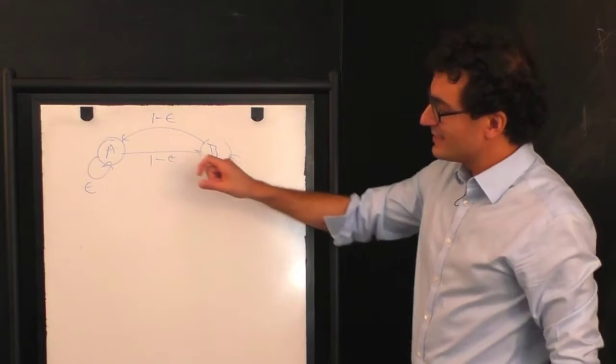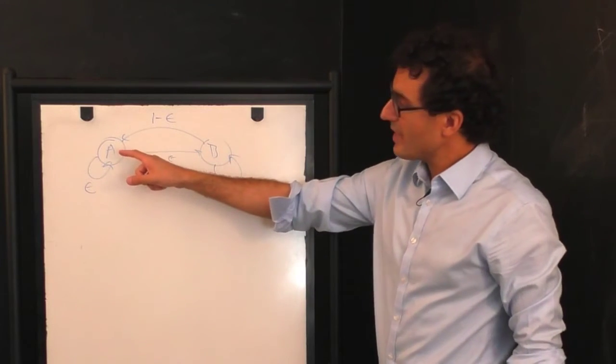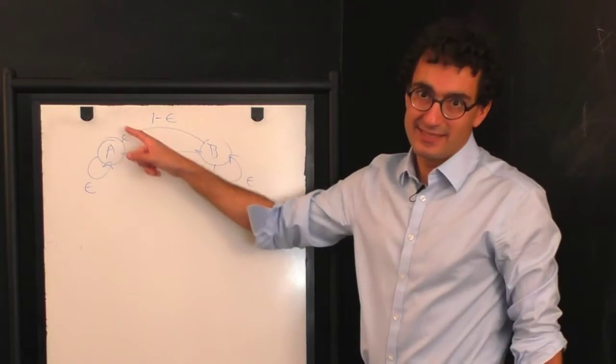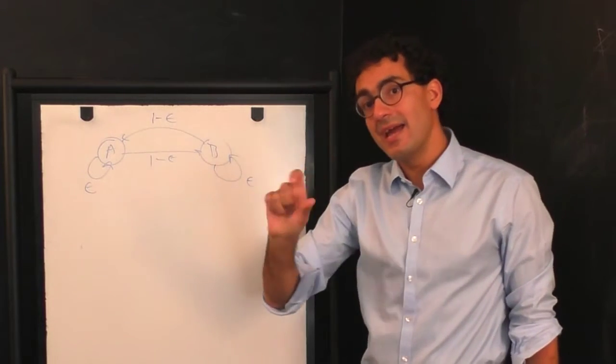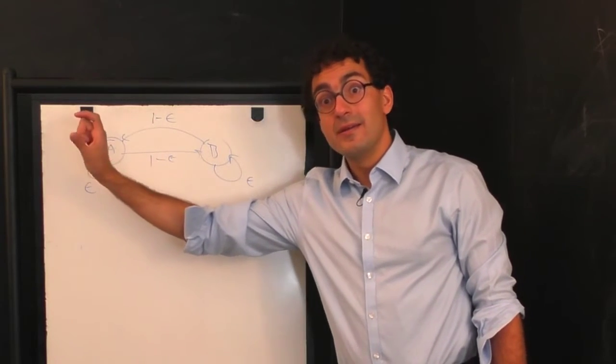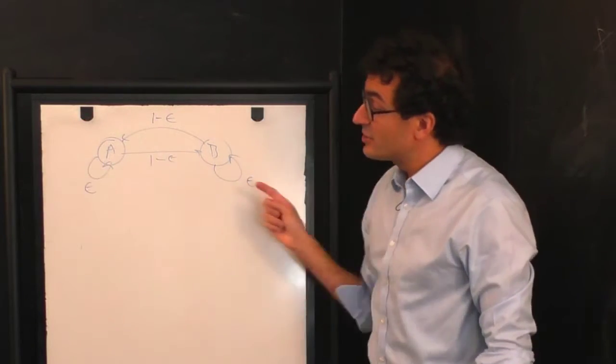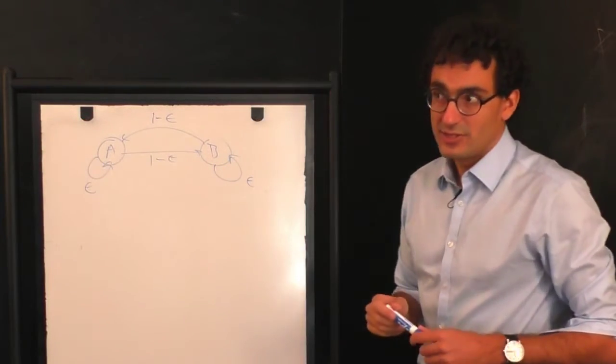As epsilon gets larger and larger, it will have a certain probability to stay in state A. So it might go A, A, A, B, B, B, B, A, B, A, A, B, B. It's a kind of slippy counter as epsilon gets larger and larger.